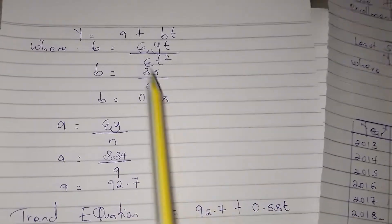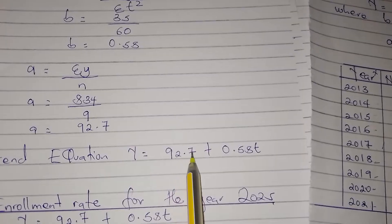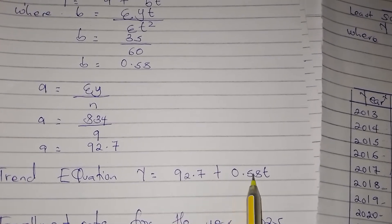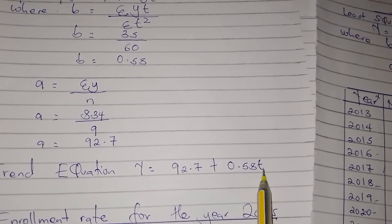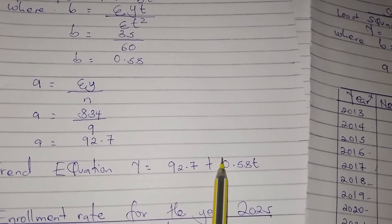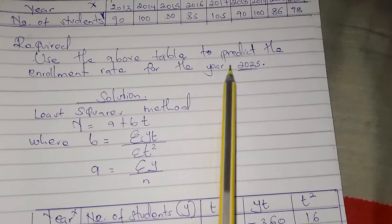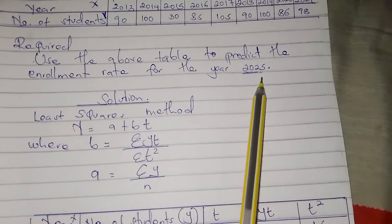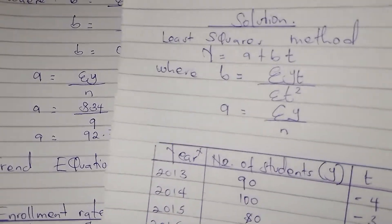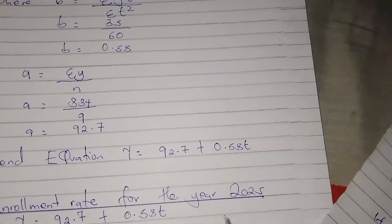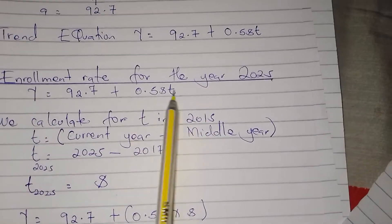After that, we substitute into the equation. We have a equals 92.7 and b equals 0.58, so y equals 92.7 plus 0.58t. This becomes our trend equation. But they asked us to predict the enrollment rate for the year 2025, so we need to determine the enrollment rate for that year.